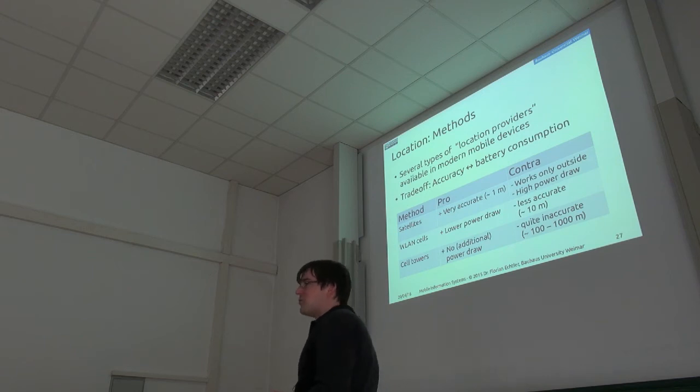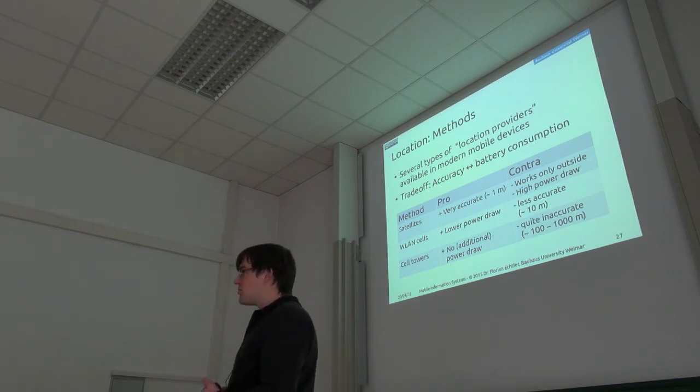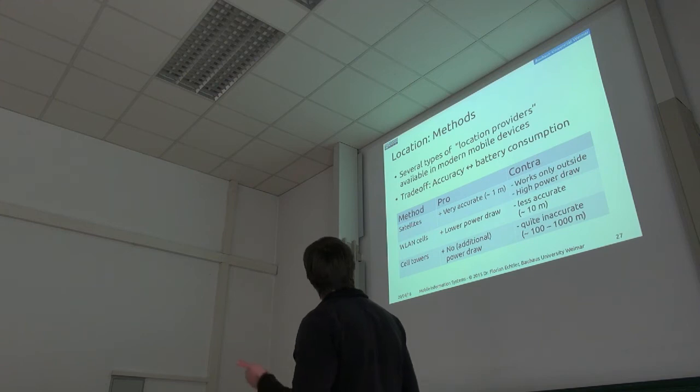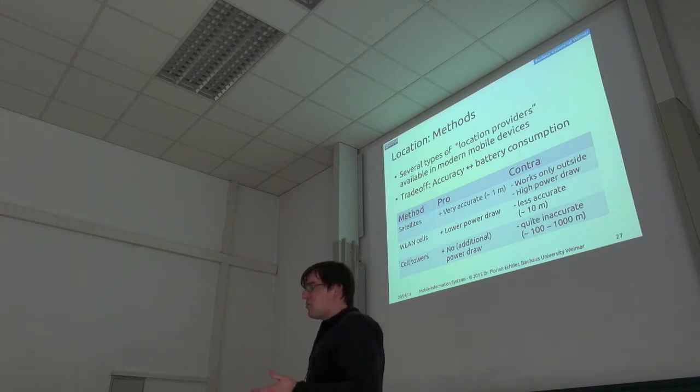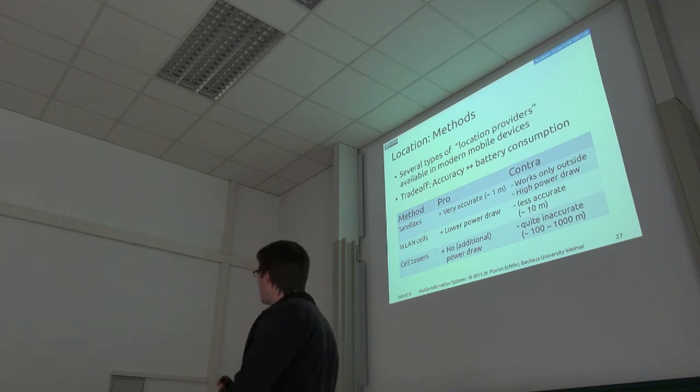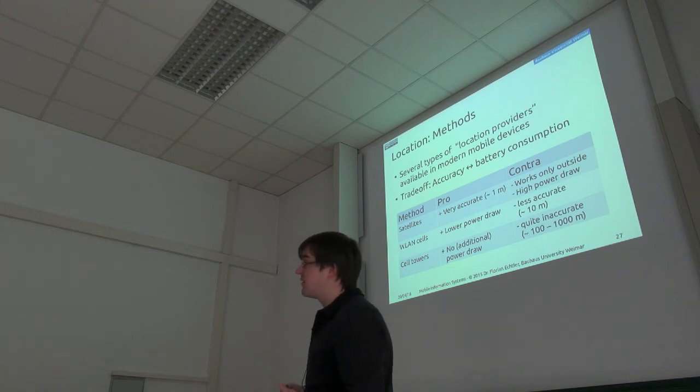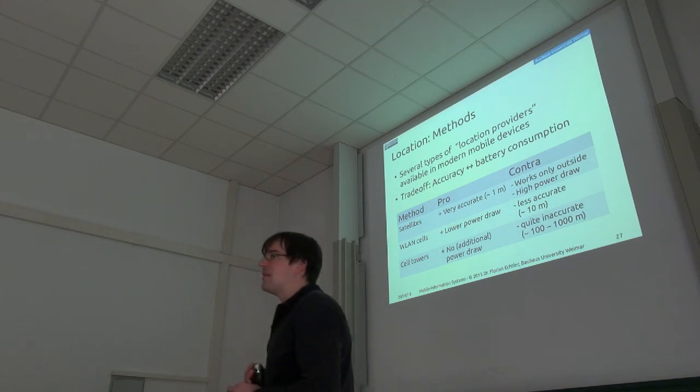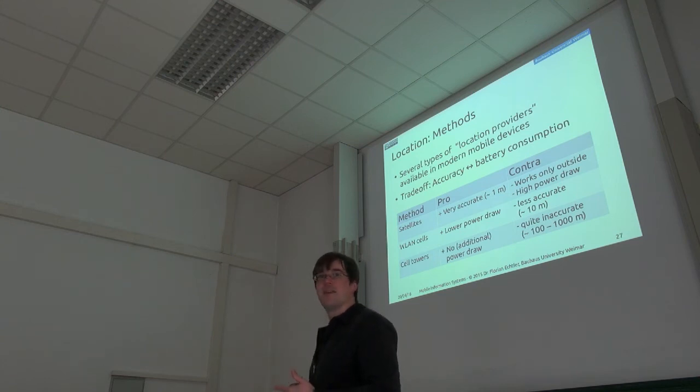Brief summary of methods you can actually use to determine your location. We can use satellites, GPS, GLONASS, and so on. They are very accurate, down to maybe one meter, but they have a pretty high power draw when you turn on GPS, so your battery empties faster, and it usually only works outside. Maybe it works when you're close to a window, but in general the signal strength of the GPS satellites is so low that you just need to be outside for this to work.